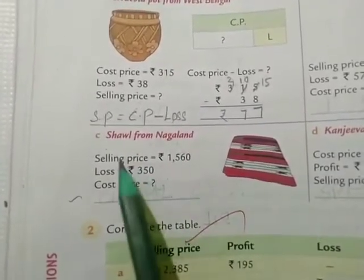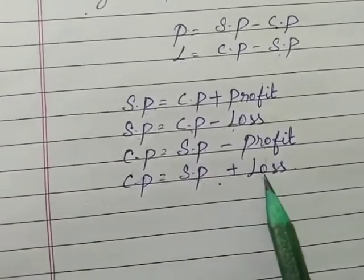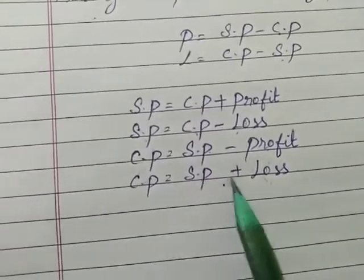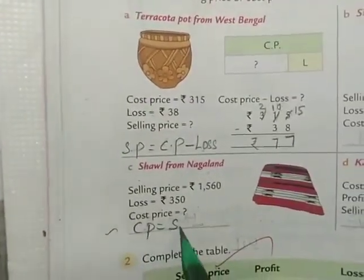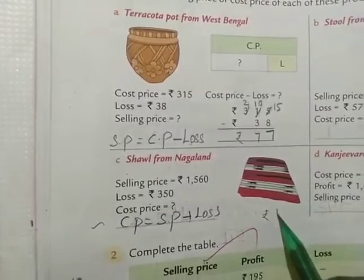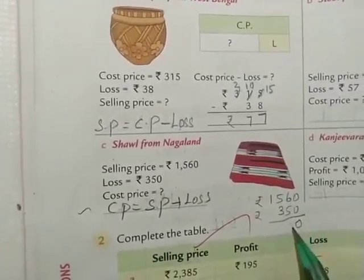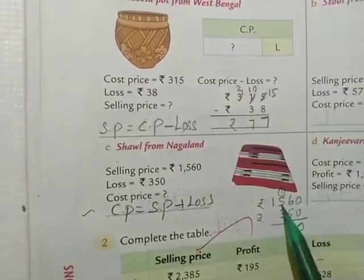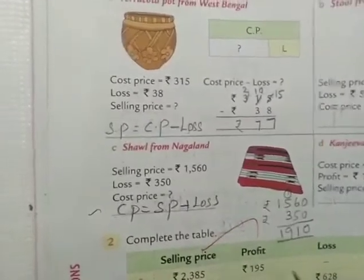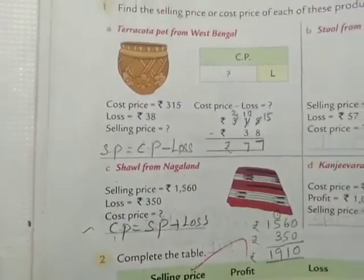Next one — a shawl from North India. They have given selling price with a loss, and they are asking for cost price. Cost price will come from these two formulas. Since selling price with loss is given, we are going to use the last formula: cost price equals selling price plus loss. Write the formula and substitute: selling price is rupees 1560, loss is rupees 350. 0 plus 0 is 0, 6 plus 5 is 11, carry 1, 5 plus 1 plus 3 is 9, 1 plus 3 is... So the cost price is rupees 1910.